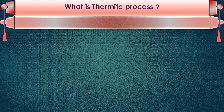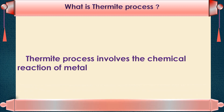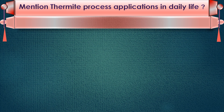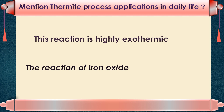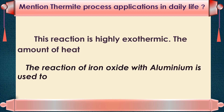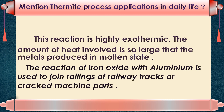What is the Thermite process? The Thermite process involves the chemical reaction of metal oxides with aluminium. This reaction is highly exothermic. The amount of heat involved is so large that the metals are produced in molten state. The reaction of iron oxide with aluminium is used to join railings of railway tracks or cracked machine parts.